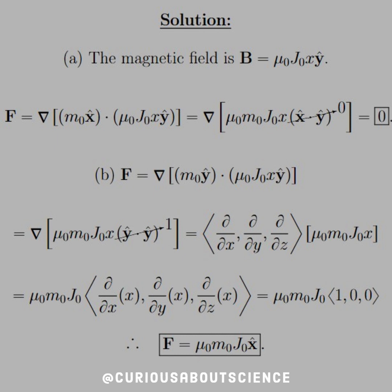Now, if we change the orientation of the dipole moment to the Y direction, then we see that the dot product goes to one. And so if we apply the gradient operator onto all of these variables, we see that only one survives, because it's a function of X, and the derivatives of Y and Z go to zero, as you see with the calculation carried through. So if the dipole is in the Y direction, the force is equal to μ₀m₀J₀ in the X direction.